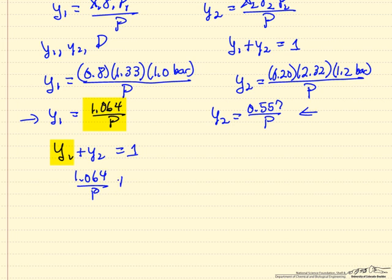1.064 over pressure plus 0.557 over pressure equals 1, which means the pressure, and the pressure is going to be in bar because that's what we have used elsewhere in the equation, 1.62 bar.